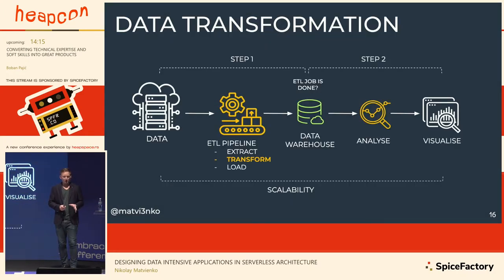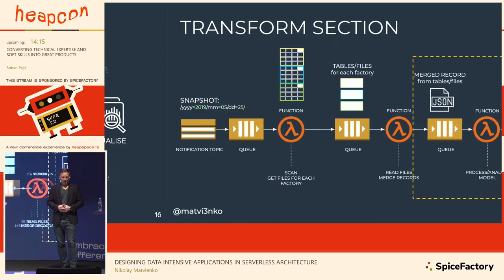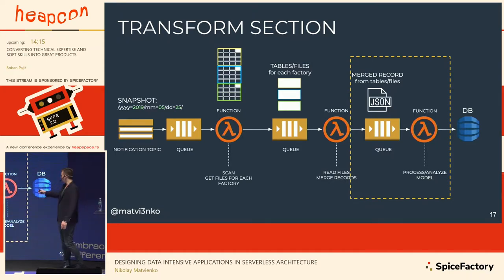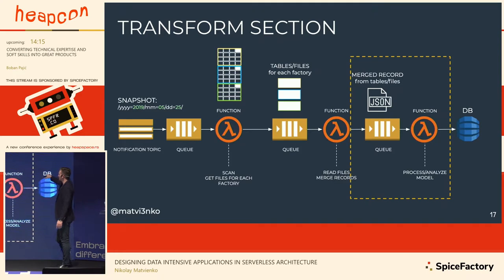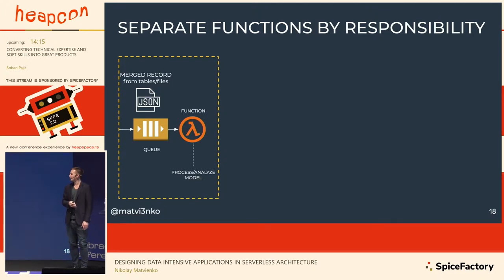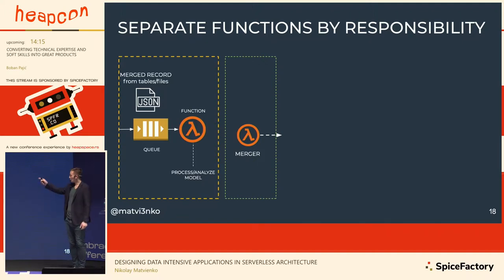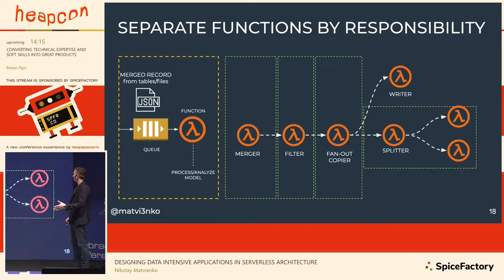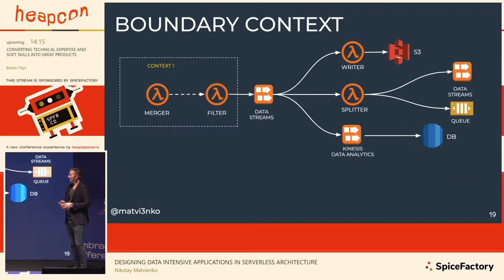Now let's focus on how to transform the data. There is our minimalistic pipeline and the part where we transform the data. One key suggestion: do not put the whole transformation logic into one Lambda function. Use event-driven design patterns — for example, you can make a merger, add a filter, make a fan-out copier, use SNS or Kinesis for that purpose, or a writer-splitter. But if you do that, focus on your models and contracts.